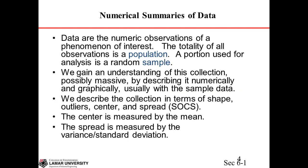Numeric summary of the data. Basically, the data are the numeric observations of a phenomenon of interest. The totality of all observations is called the population, and a portion of it used for analysis is called a random sample — it's part of the population. The goal is to gain understanding of the population or the whole collection, which can be very massive. By means of describing it numerically and graphically, usually with the sample data, we describe the collection in terms of the shape, the outliers, center, and the spread — the full aspect of the data distribution.